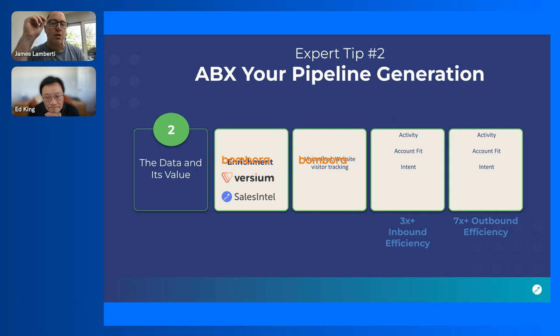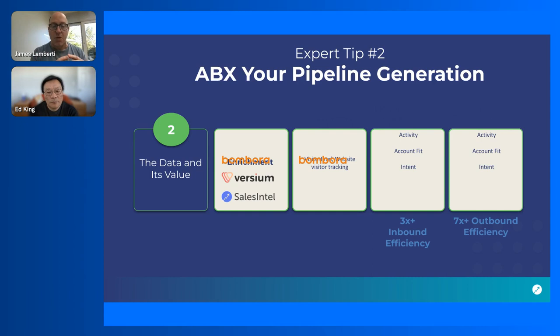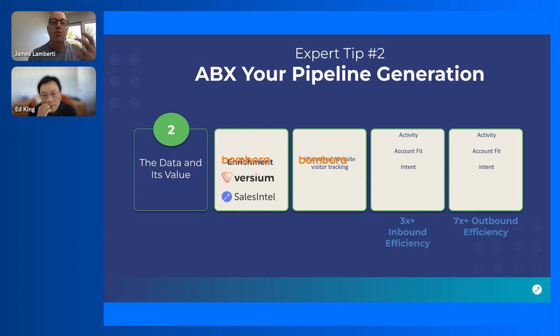Expert tip number two is ABX your pipeline generation — adding intent data and enrichment to get down to that subset of the market that's actively in-market, and expanding your ability to outbound intelligently. This is the all-bound motion. When you add intent data and enrichment, you get three different buckets of scoring for your marketing automation: marketing activity itself, the account fit score, and the intent data.